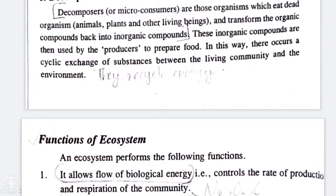Decomposers, or micro consumers, are those organisms which eat dead organisms — animals, plants, and other living beings — and transform the organic compounds back into inorganic compounds. They feed on dead and decaying matter. In this way, there is a cyclic exchange of substances and energy within the living community.